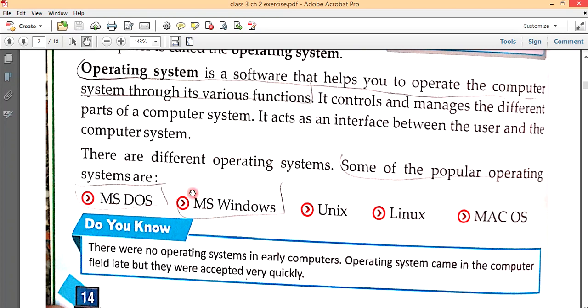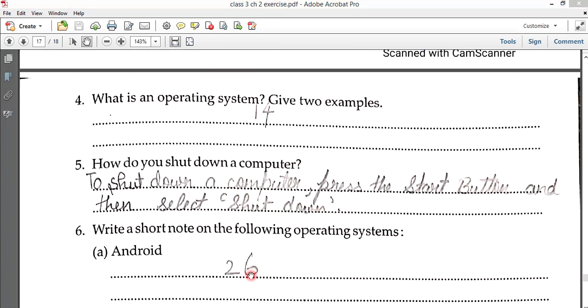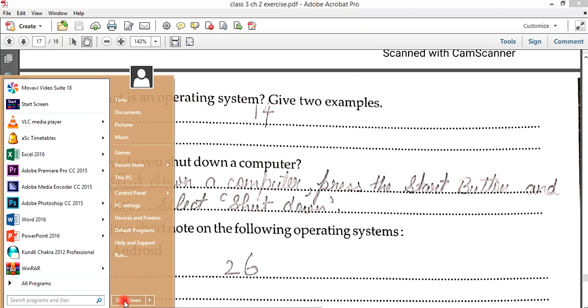How do you shut down the computer? To shut down a computer, press the start button and then select shut down. Then write short note on the following operating systems.